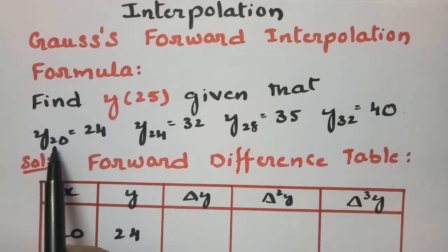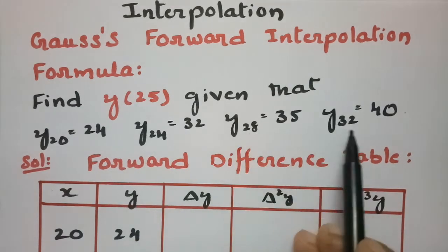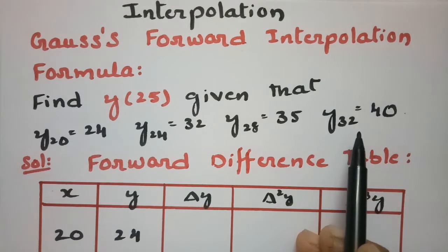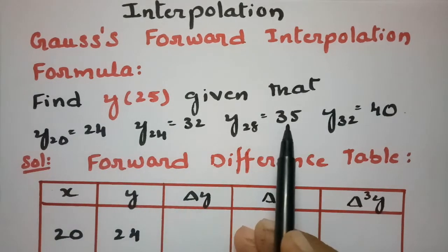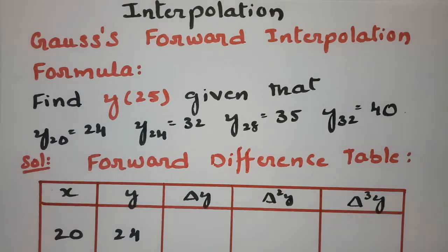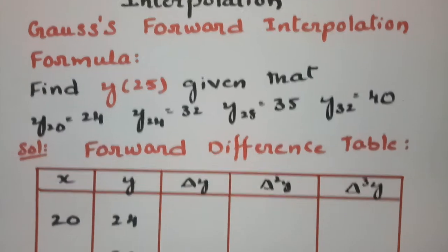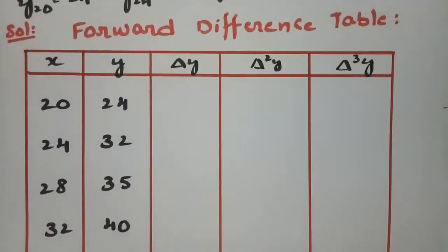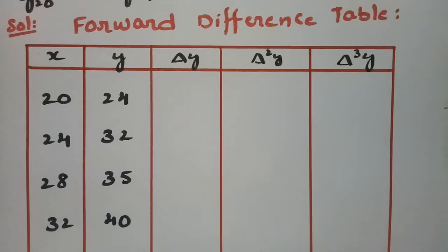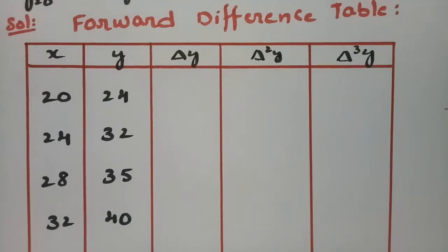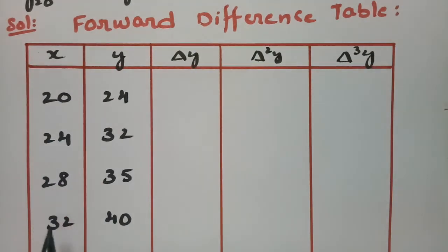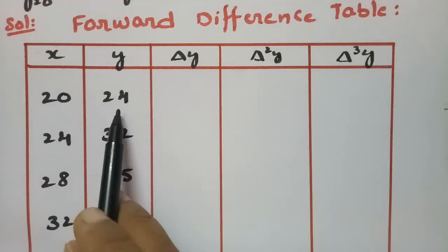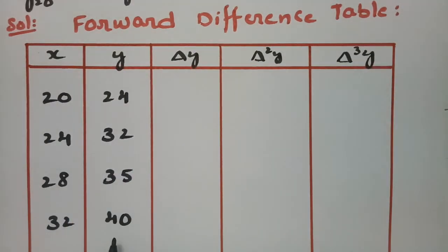The x values are 20, 24, 28, and 32, and the corresponding y values are 24, 32, 35, and 40. First of all, for using Gauss's forward interpolation formula, we have to create this forward difference table.